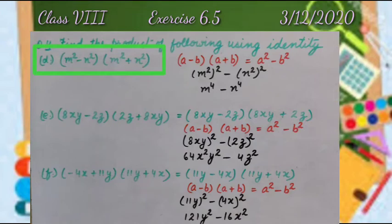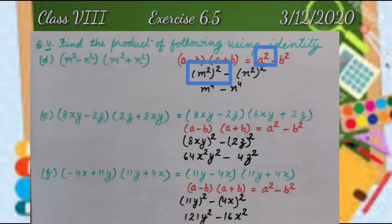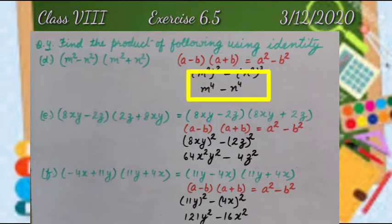Part D: m² - n² into m² + n². Here we can see we have to find the product of sum and difference of same terms. So we will use the identity (a - b)(a + b) = a² - b², where a is m² and b is n². So inserting the values we get (m²)² - (n²)². When we solve it, we get the answer m⁴ - n⁴.